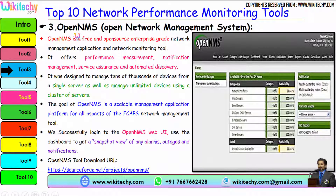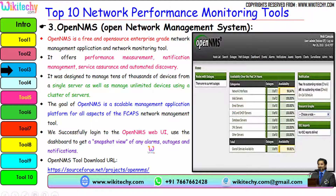Rank 3 is OpenNMS — a free and open-source enterprise-grade network monitoring tool. It offers performance measurement, notification management, service assurance, and automated discovery. It was designed to manage tens of thousands of devices from a single server, as well as manage unlimited devices using a cluster of servers. The goal of OpenNMS is to be a scalable management application platform for all aspects of FCAPS network management. Once you've successfully logged in to the OpenNMS web UI, you are able to see the dashboard showing a snapshot of alarms, outages, and notifications. You can download this tool — it is open source and available at sourceforge.net.